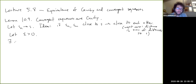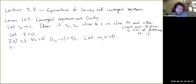There exists a capital N such that for all n greater than capital N, we have |S_N − S| < epsilon over two. Now let little m and little n be bigger than capital N. Then the triangle inequality tells us that |S_N − S_M|, which equals |S_N − S + S − S_M|, is less than or equal to the sum.